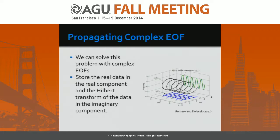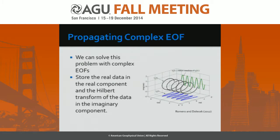We solved the problem with complex EOFs, where we put our data in the real part of a complex array and the Hilbert transform in the imaginary part. The Hilbert transform is actually very trivial — you basically shift each Fourier mode in the data by 90 degrees and put them together. Now all of a sudden you can get amplitude, group velocity, and phase velocity of whatever propagating structure is there.